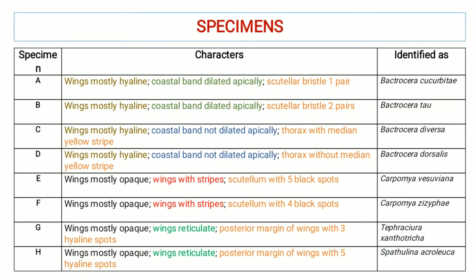The first group consists of specimens that have wings that are mostly hyaline, and the second group consists of specimens whose wings are mostly opaque. We have divided the specimens into two categories based upon wing texture: wings mostly hyaline and wings mostly opaque.